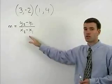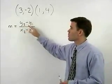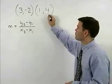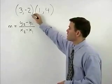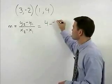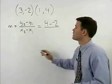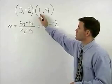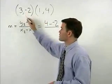Using our slope formula, we take the second y minus the first y, which in this case is 4 minus a negative 2, over our second x minus our first x, which in this case is 1 minus 3.